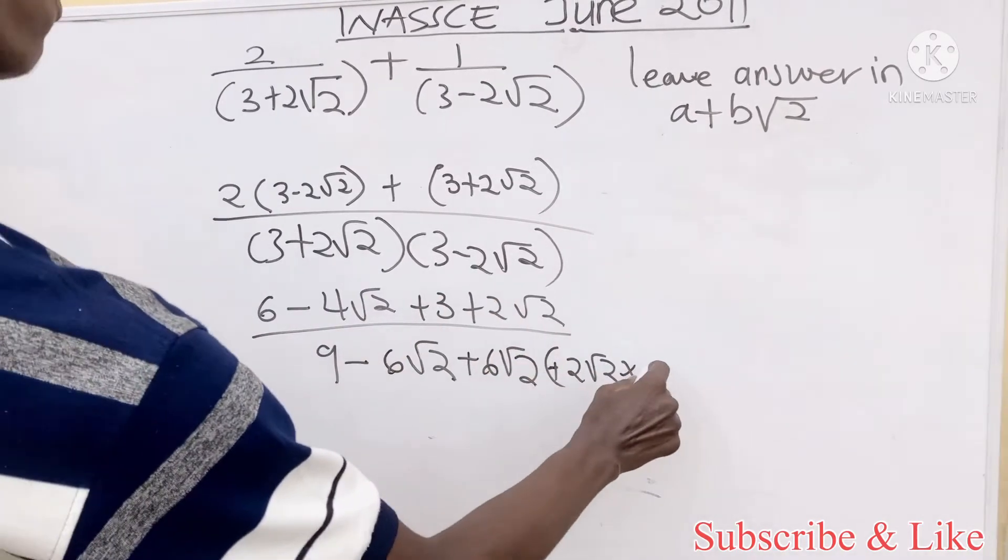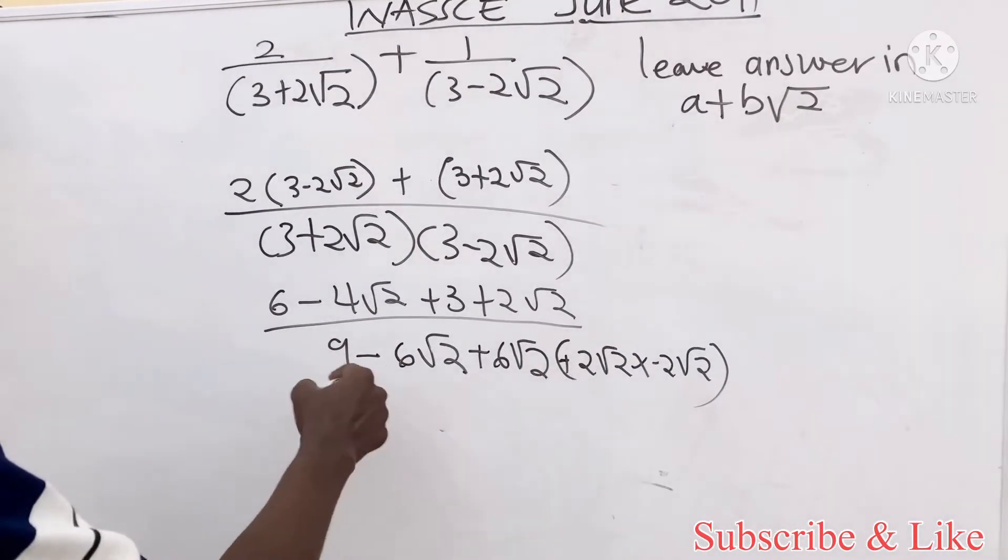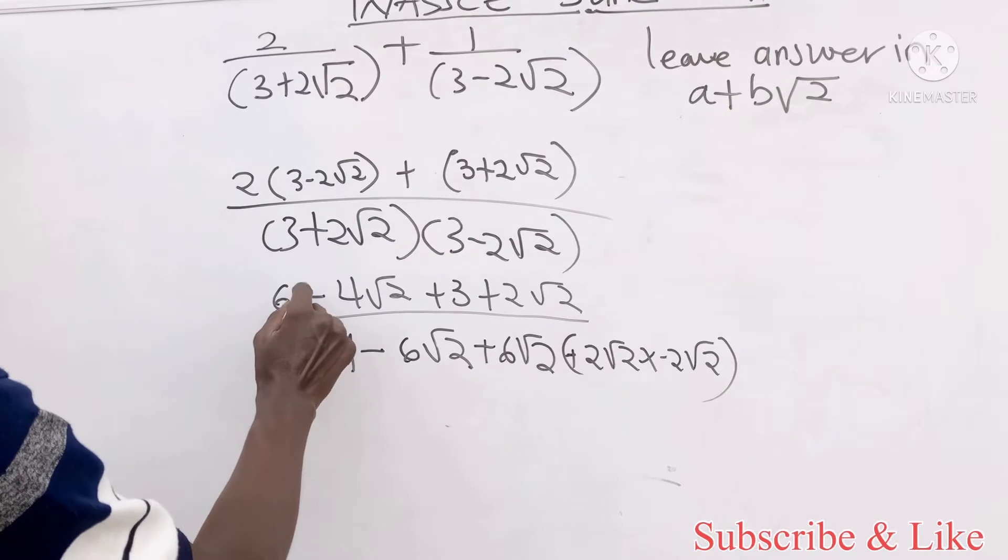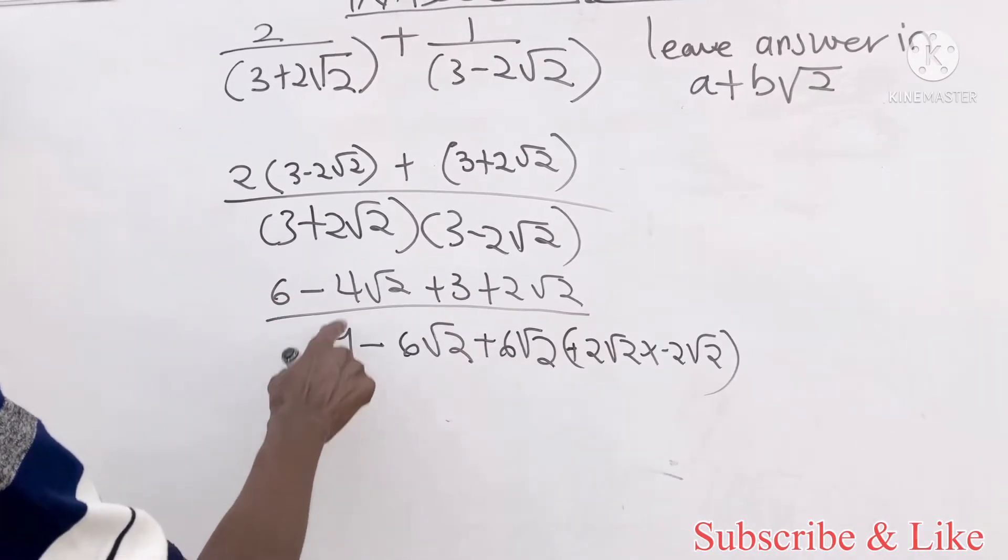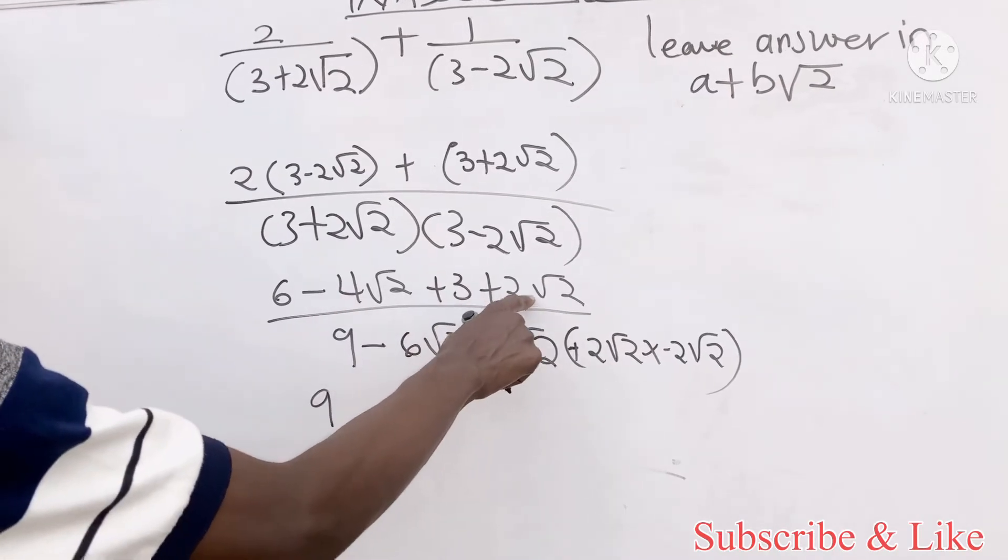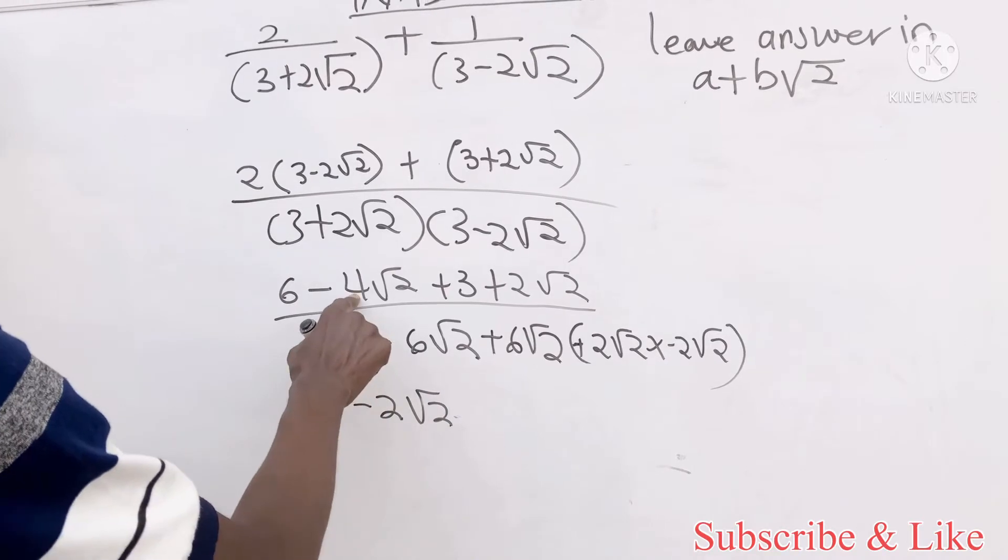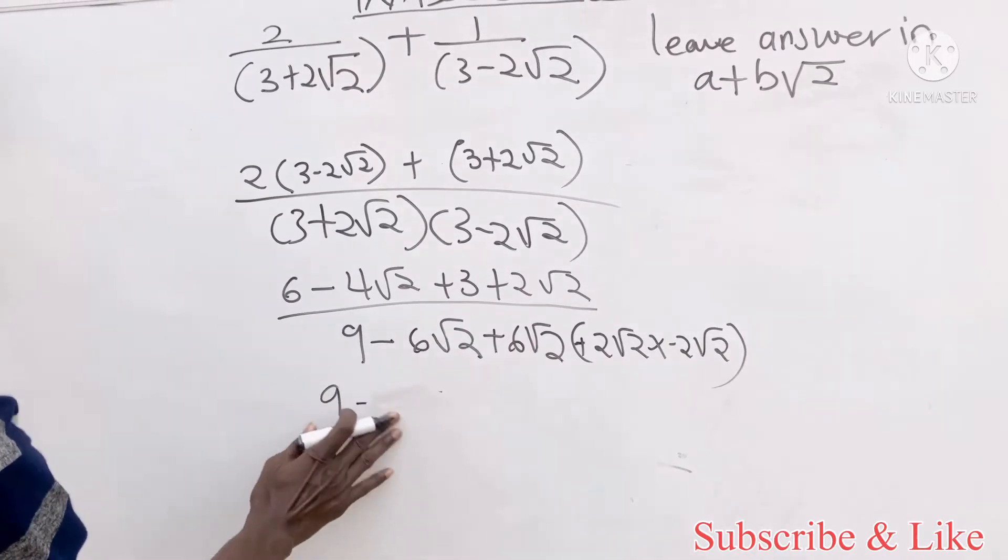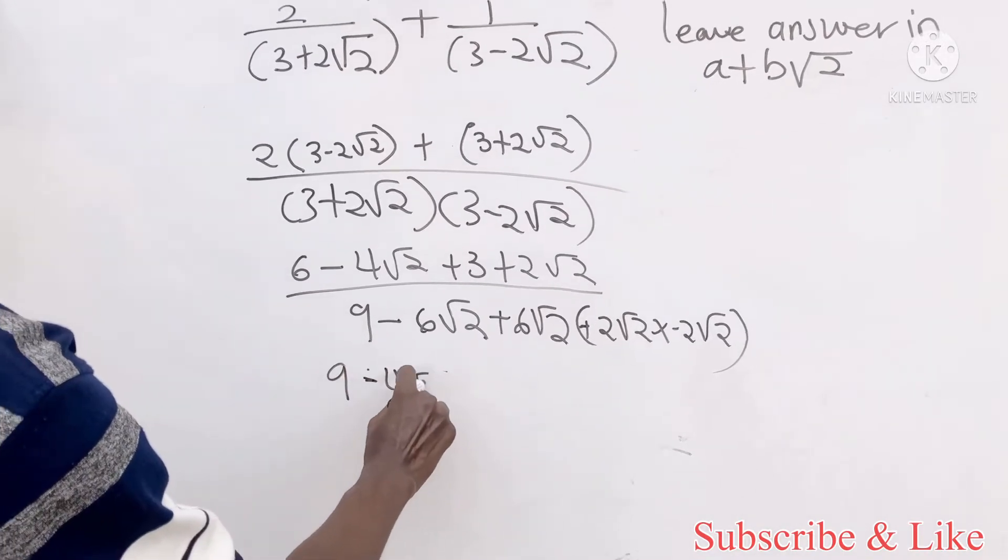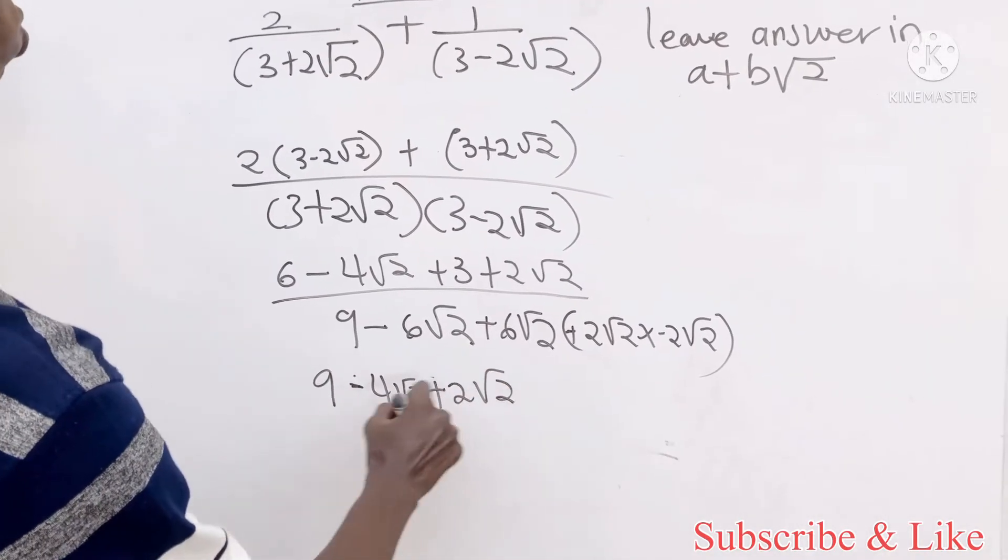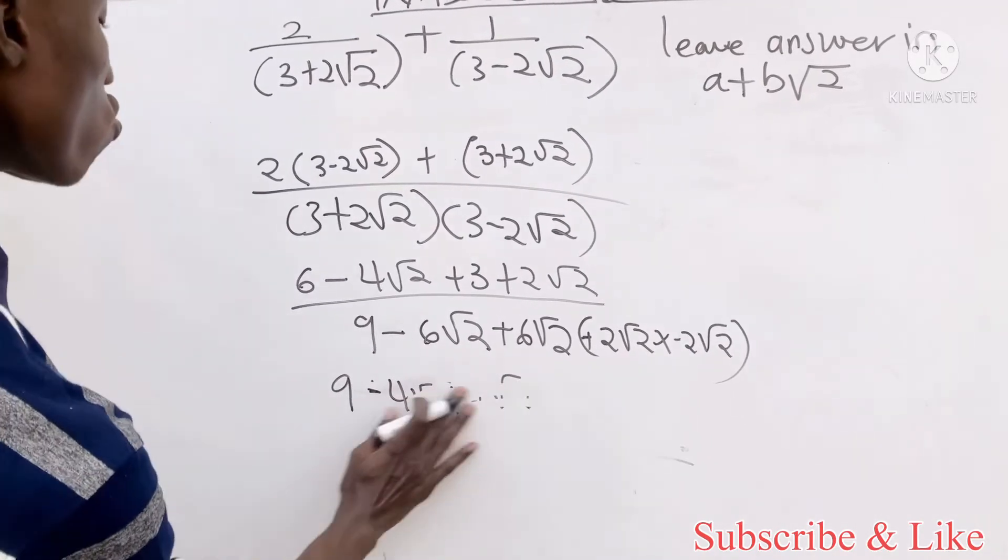Now let's expand this part. You get six plus three, which is nine. Six plus three is nine minus four root two plus two root two, which gives us minus two root two. That is minus four root two plus two root two, which is the same as minus four plus two, which is minus two root two all over.